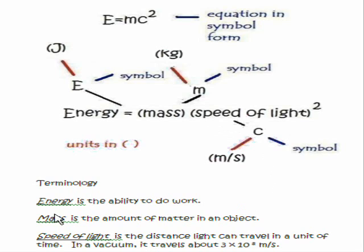If you look at the terminology, you've got energy, mass, and the speed of light which travels in a vacuum at about 3 times 10 to the 8 meters per second. Feel free to pause the video and take notes if you need to.